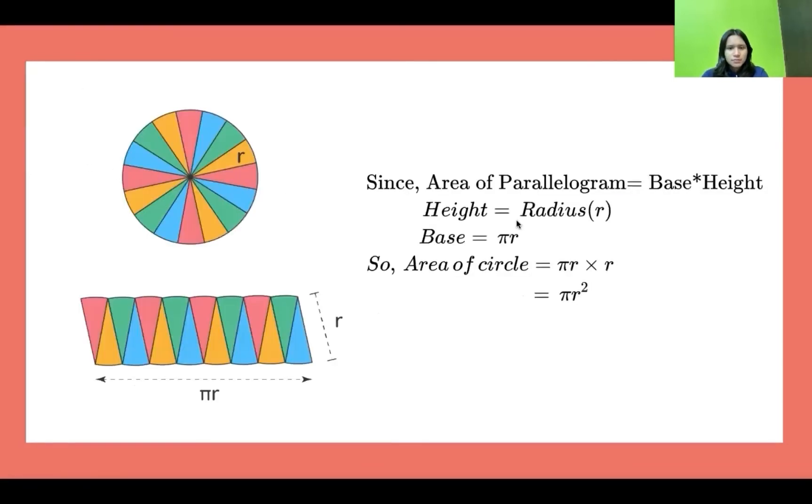Since the area of parallelogram is base times height, when we convert the circle into parallelogram, then the height equals the radius of the circle. So we suppose the height as r.